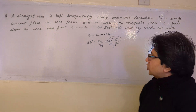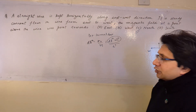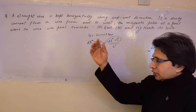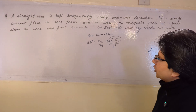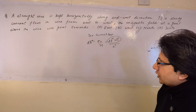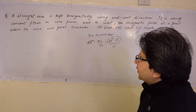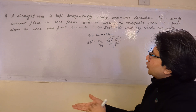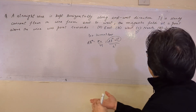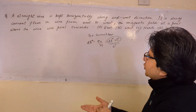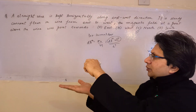So the answer is north. We can also calculate the direction of the magnetic field at this particular point using the Biot-Savart law. Here we have a straight wire held horizontally, with the current flowing from east to west, and the magnetic field at the point above the wire is directed toward north.